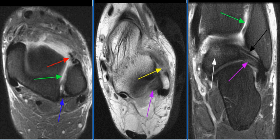The three ligaments connecting the tibia and fibula are the anterior syndesmotic ligament, also known as the anterior inferior tibial fibular ligament, the posterior inferior tibial fibular ligament, and the interosseous ligament.